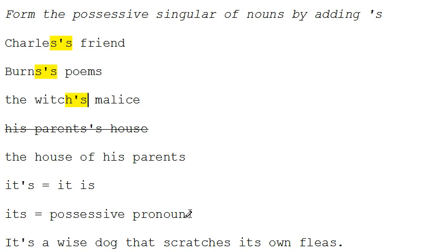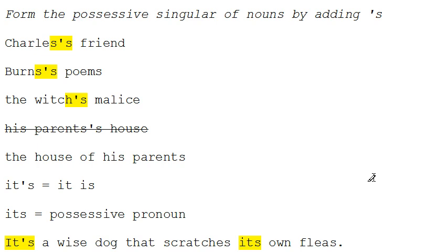Now this gets confused with the possessive pronoun its. When we're forming the possessive pronoun its, we want to make sure that we don't add an apostrophe — that is reserved for the contraction it apostrophe s. So in the sentence: it's a wise dog that scratches its own fleas — it apostrophe s is the contraction, whereas its is the possessive pronoun.